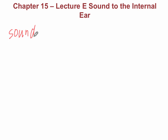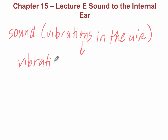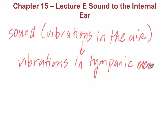So just to summarize, first of all, there is sound, which are essentially vibrations in the air. And those vibrations first are directed into the external auditory canal. And that is going to cause vibrations in the tympanic membrane. And the tympanic membrane is simply the eardrum. So once this membrane vibrates, then that's going to transfer information to the ossicles.